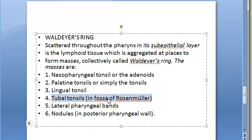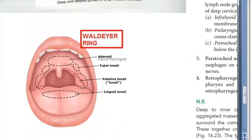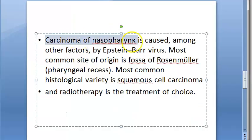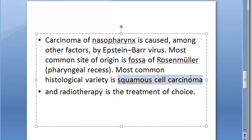They are not including Rosenmüller itself, but they are including tubal tonsils which are in the fossa of Rosenmüller. This is the tubal tonsil of Gerlach. Behind that you have the fossa of Rosenmüller. So the tubal tonsil is a part of Waldeyer's ring, and the tubal tonsil is in the fossa of Rosenmüller. The cancer that occurs here is carcinoma of the nasopharynx, which can be caused by Epstein-Barr virus. Histologically it will be squamous cell carcinoma.